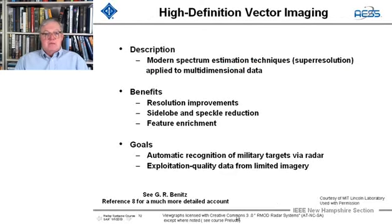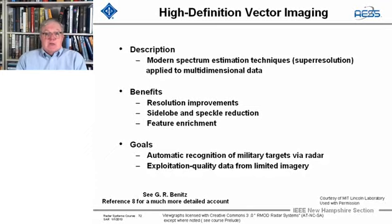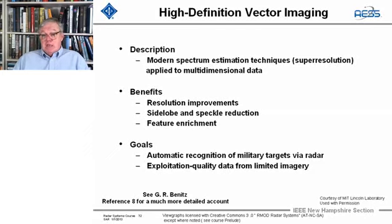Now we're going to talk about an algorithm. Many of you may not be familiar with modern spectrum estimation techniques — so-called super resolution. It can be applied to multi-dimensional data to get better-than-expected resolution. The benefits are better resolution, side lobe and speckle reduction, and feature enhancement. The goal is automatic target recognition for the military and to exploit the quality of data in limited imagery, whether for remote sensing or military applications.